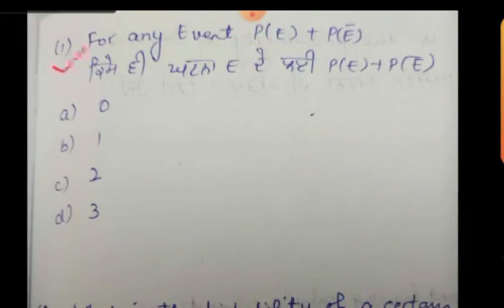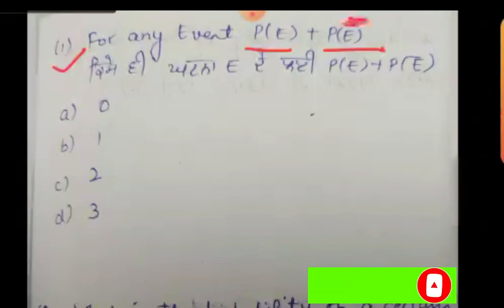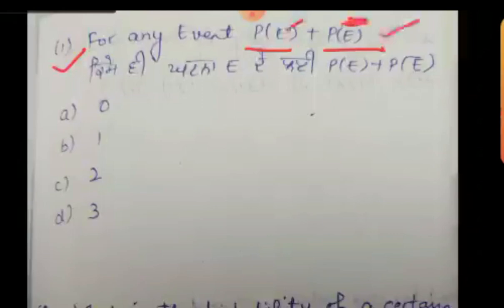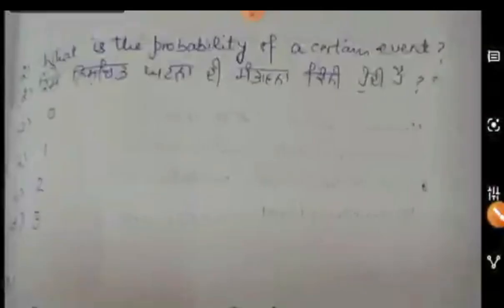First sum: For any event, P(E) — probability of event — plus probability of the event that will not occur. The meaning is: the probability that an event will occur plus the probability that it will not occur, their sum is equal to 1. So our answer is option B.